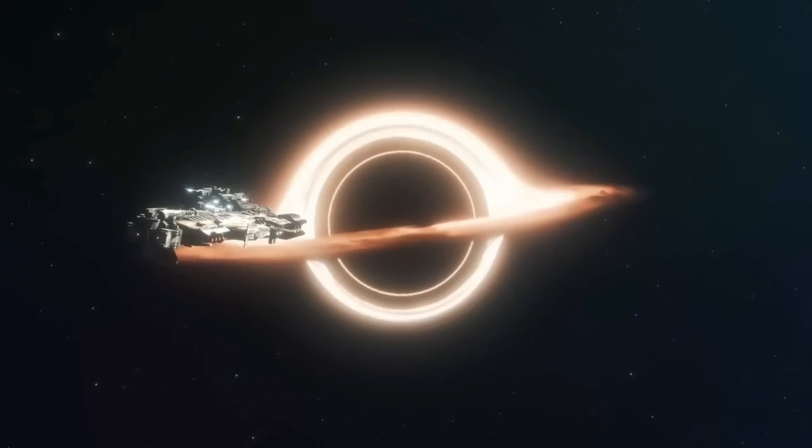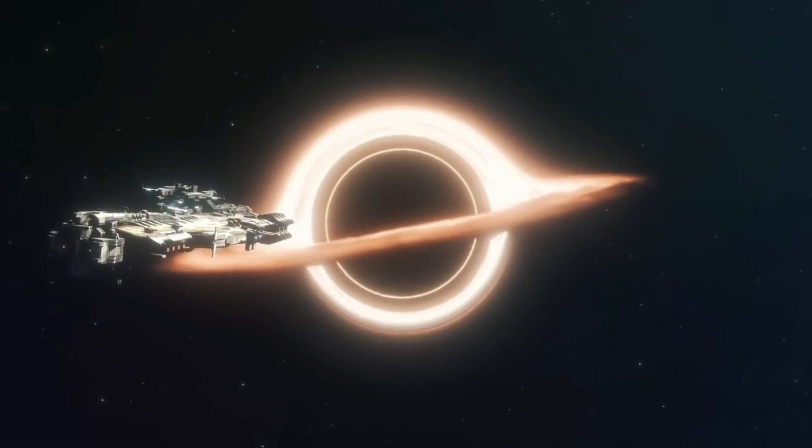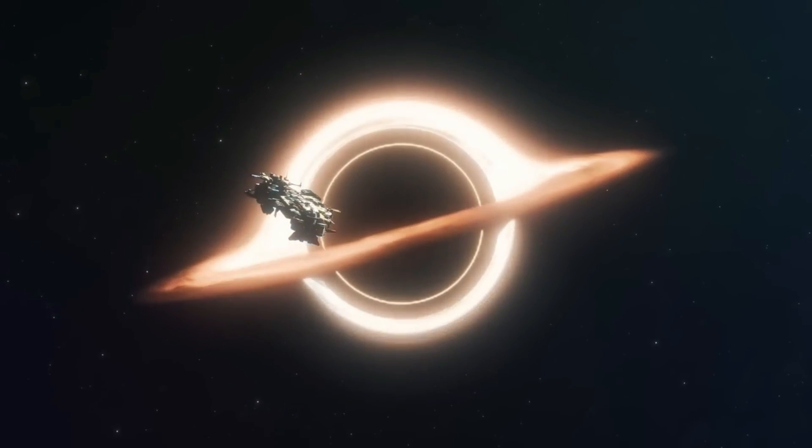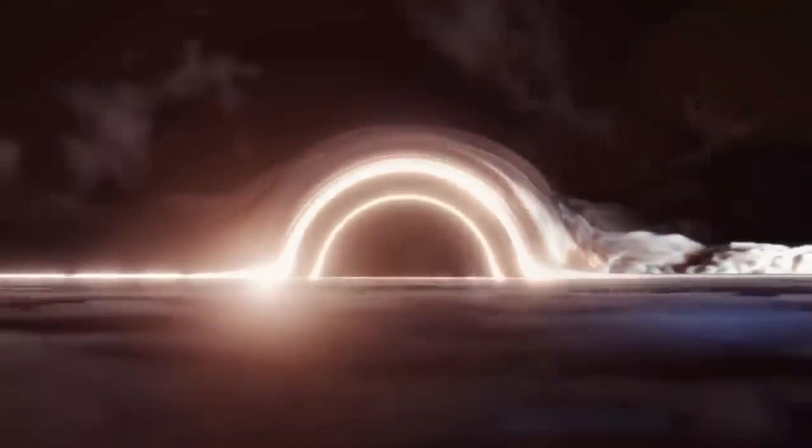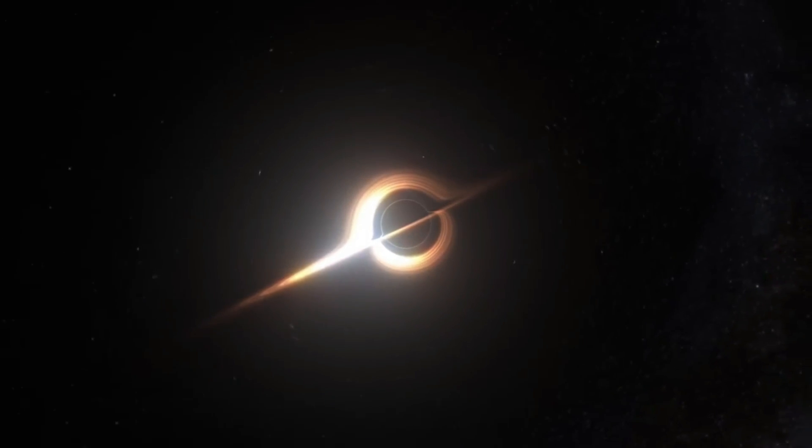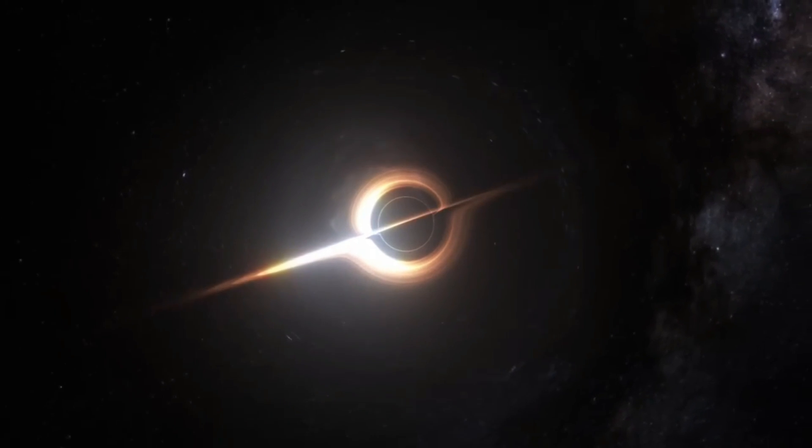Hawking proposed that black holes emit radiation, now known as Hawking radiation, and that this causes black holes to lose mass slowly over time. He also proposed that information about objects falling into black holes is stored on its event horizon, which is the point of no return.